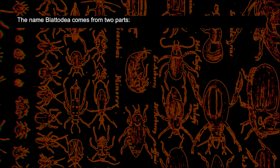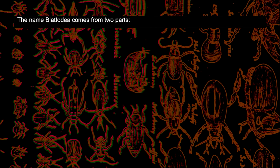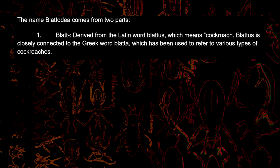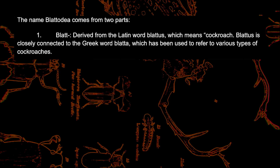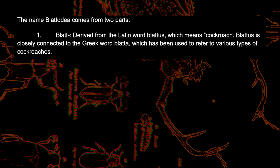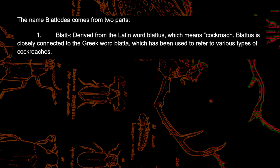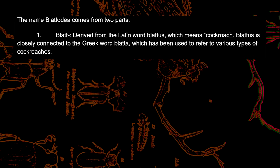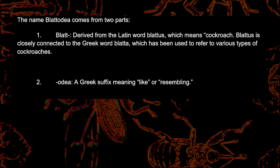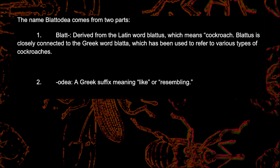The name Blattodea comes from two different languages. "Blat" is derived from the Latin word blatus, which means cockroach or pest. Blatus is closely connected to the Greek word blada, which has historically been used to refer to various types of cockroaches. Odea is a Greek suffix meaning "like" or "resembling," so their name basically means resembling a cockroach.